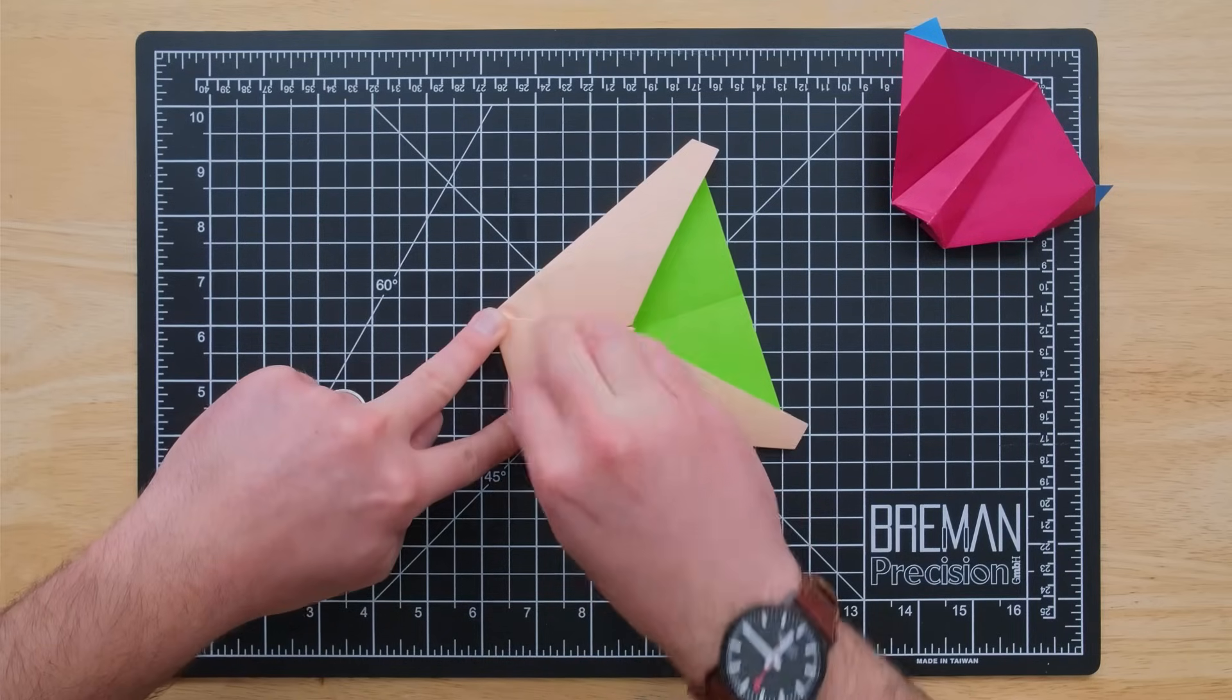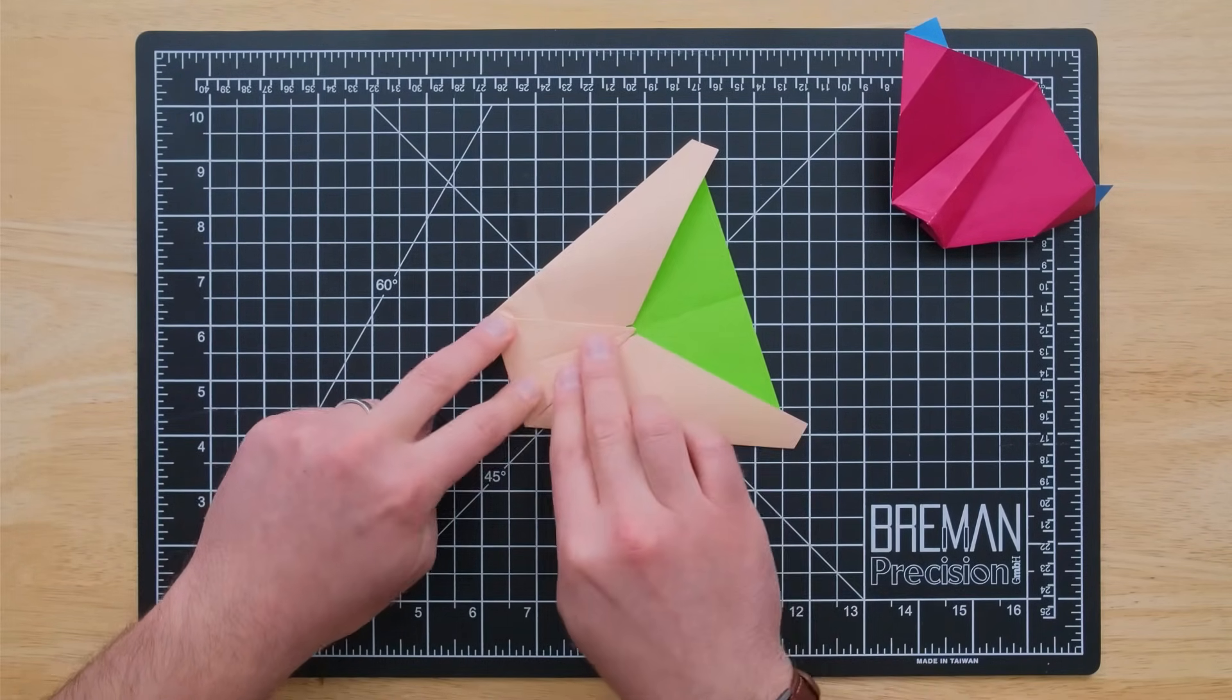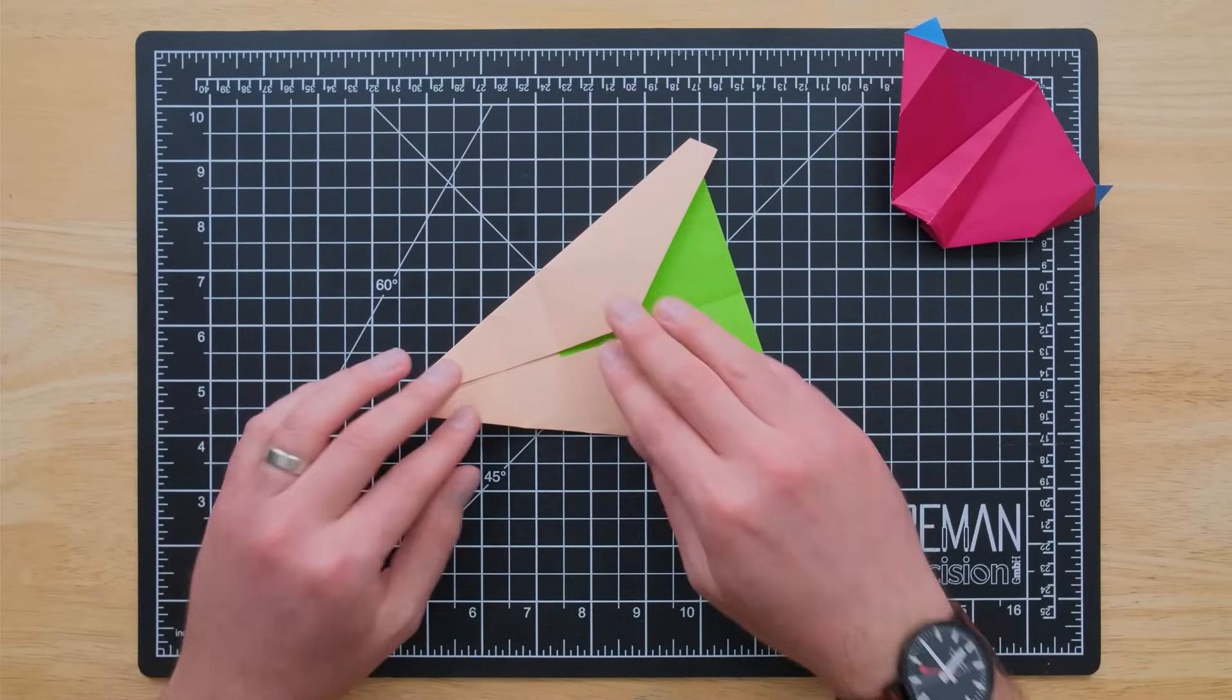And once again, kind of a tricky crease. You might have to go over it a few times because there are a lot of layers bunching up there. Things are going to get a little wrinkly. Don't worry too much about that. All right.